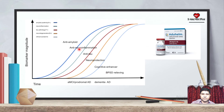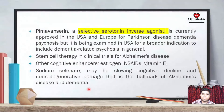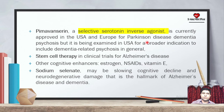This year, it will serve as an anti-amyloid, anti-neuroinflammation, and anti-tau agent. This is called neuroprotection drug discovery. Pimavanserin is a new drug and a serotonin inverse agonist. Pimavanserin is currently approved in the USA and Europe for Parkinson's disease.